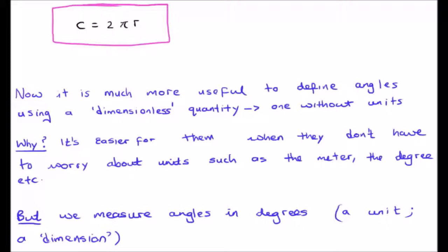For example, length of course is measured in meters, time is measured in seconds. Angles usually are measured in degrees. They have a dimension.